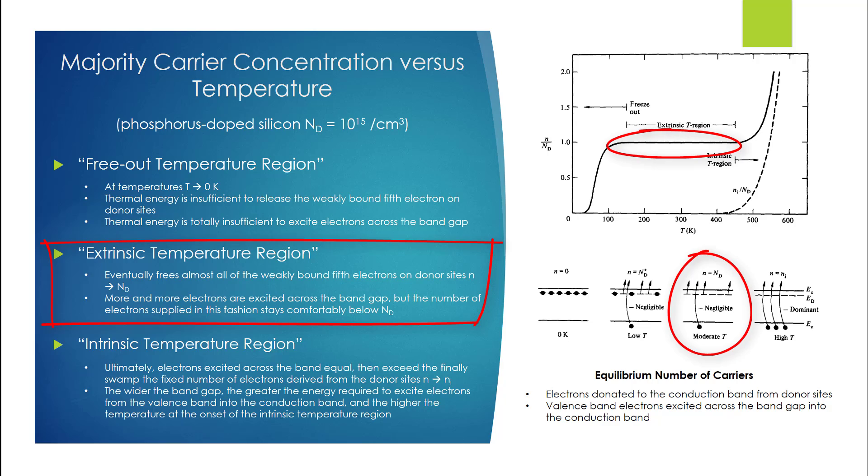Continuing to increase the system temperature eventually frees almost all of the weakly bound electrons on donor sites, such that N approaches Nd and one enters the extrinsic temperature region. In progressing through the extrinsic temperature region, more and more electrons are excited across the band gap, but the number of electrons supplied in this fashion stays well below Nd.